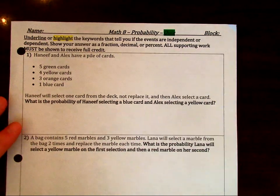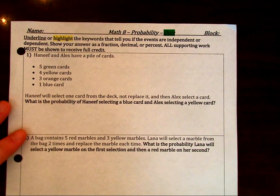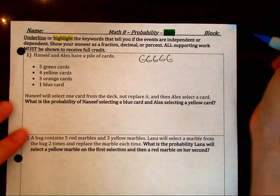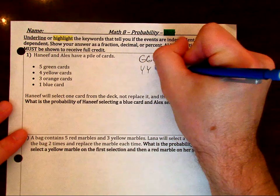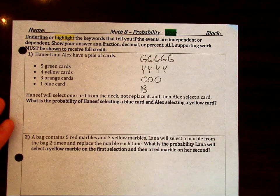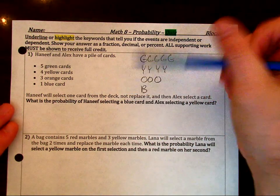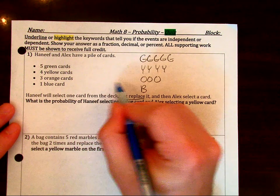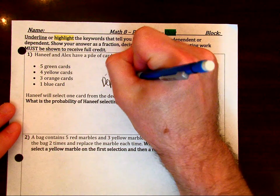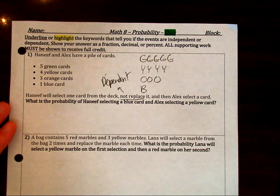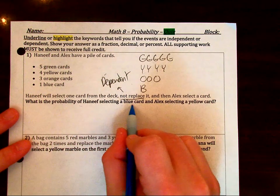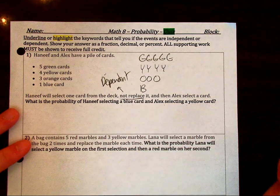So it says, Hanif and Alex have a pile of cards. I can draw this out for ourselves. So we're going to have five green cards, four yellows, three oranges, and one blue. It says, Hanif will select one card from the deck, not replace it. So that's going to be dependent. And then Alex will select a card.